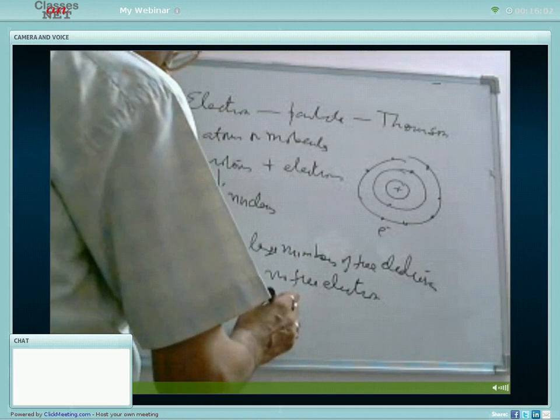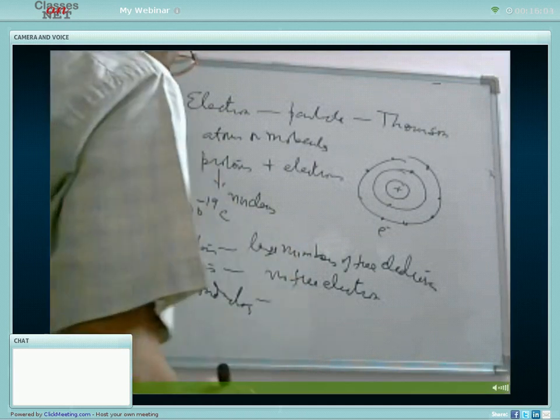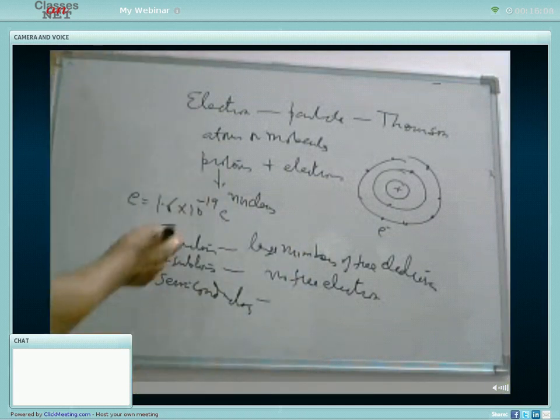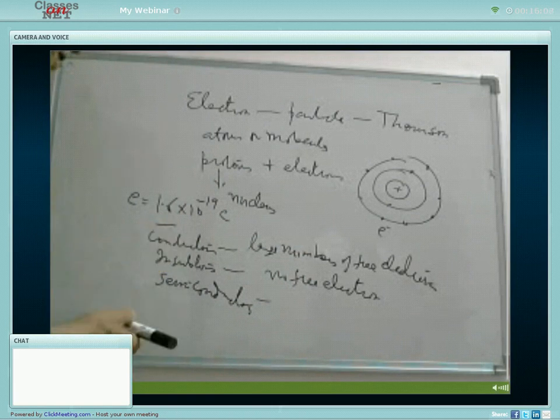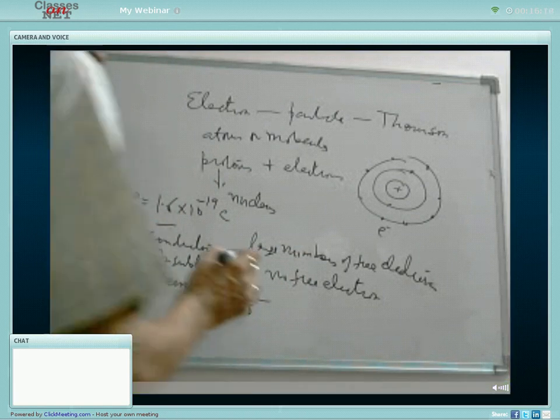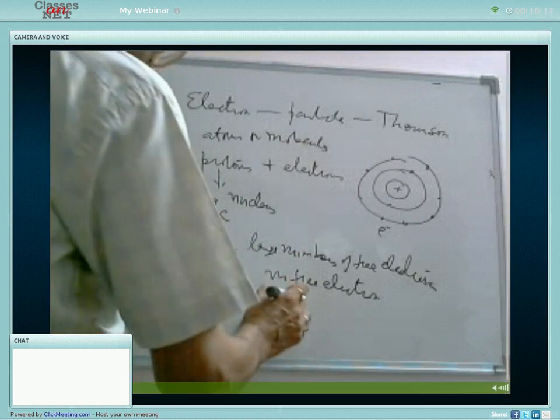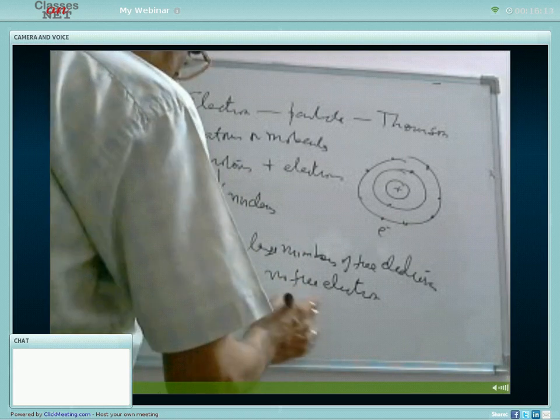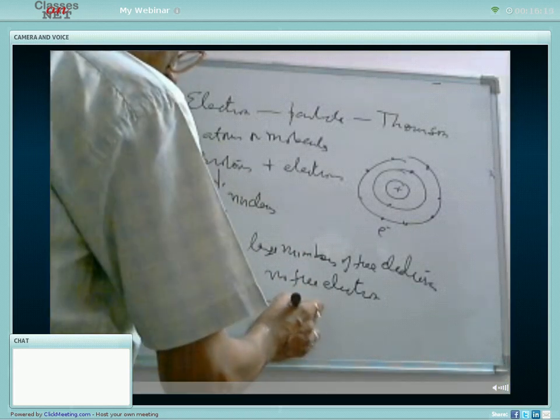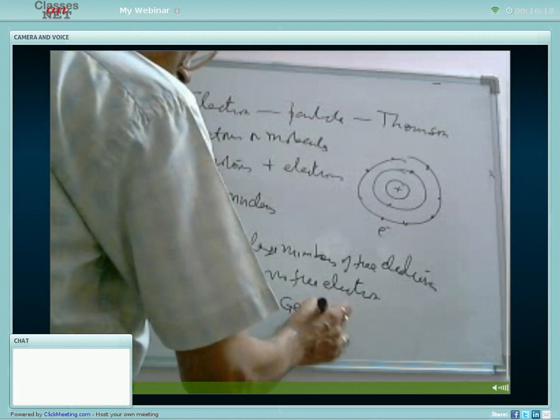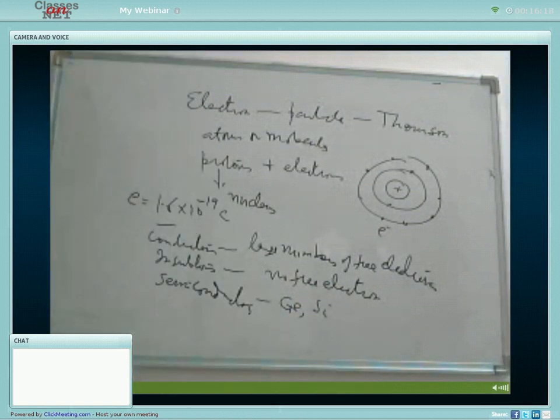Semiconductors are those materials in between, having properties somewhat common to conductors and insulators. They can be made conductors by certain procedure. Germanium and silicon are examples of semiconductors.